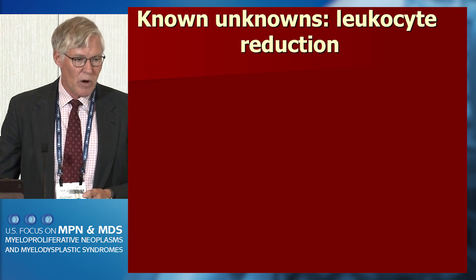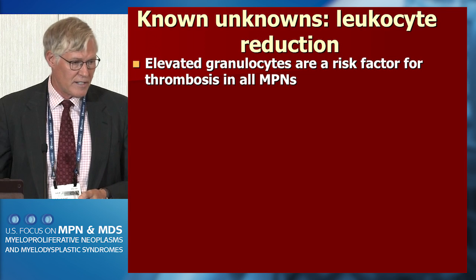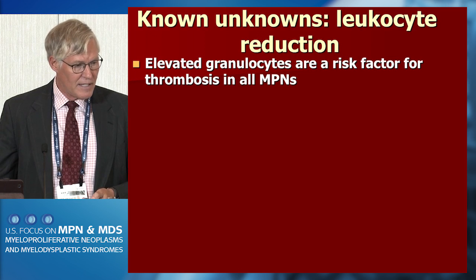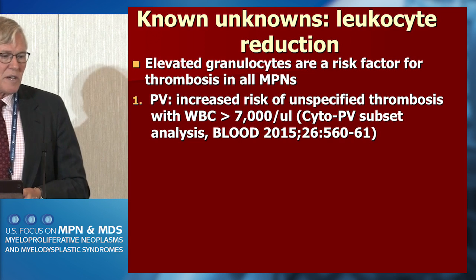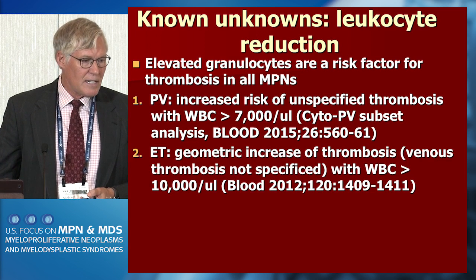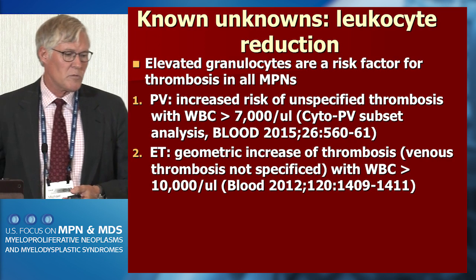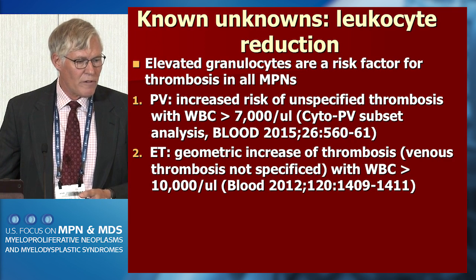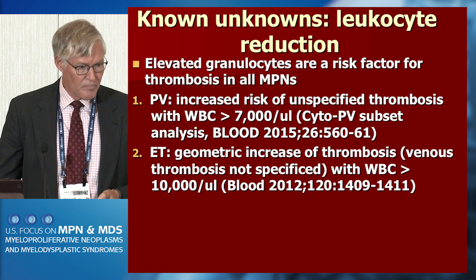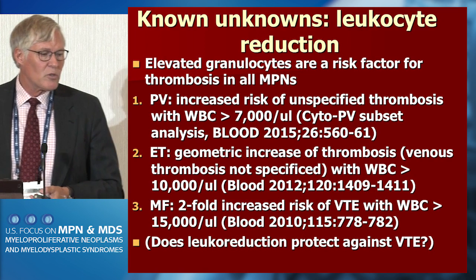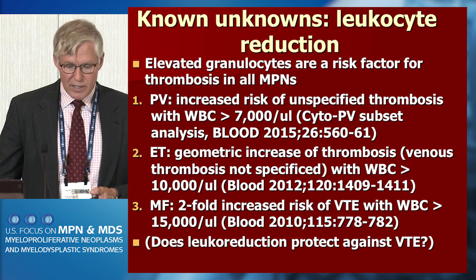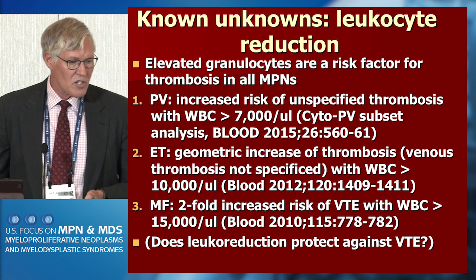For leukocyte reduction we have even fewer indirect data. Elevated granulocytes are a risk factor for thrombosis in all MPNs. In PV, there's an increased risk with white counts greater than 7,000. In ET, there was a geometric increase as the white count rose between 10,000 and 20,000 — the hazard ratio for thrombosis went from roughly 2 to 4 to 5. In MF, there was a two-fold increased risk of VTE with a white count greater than 15,000. These raise the question: does leukoreduction protect against VTE?